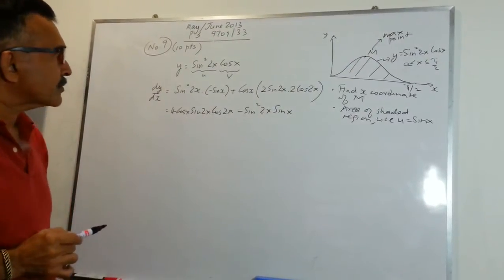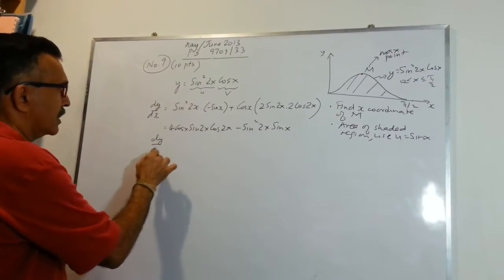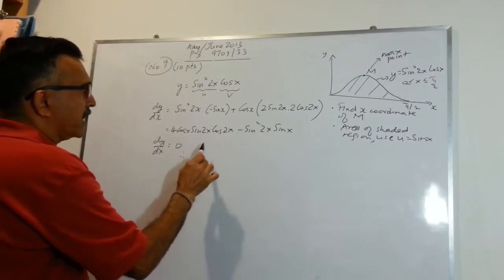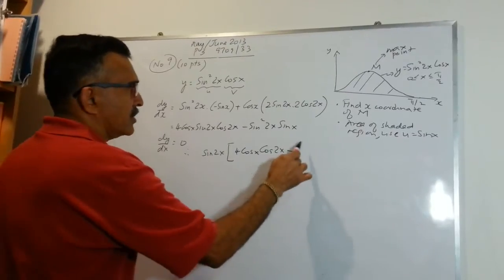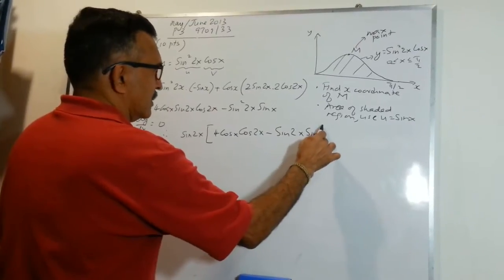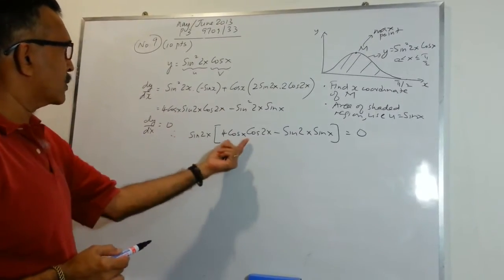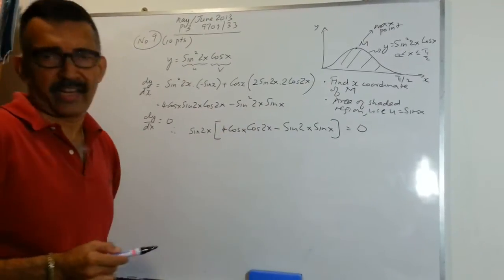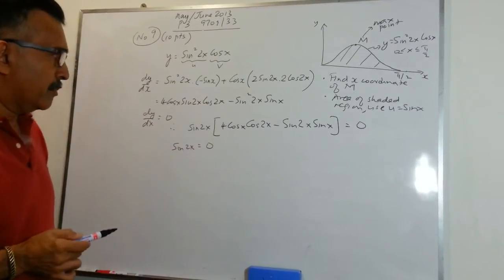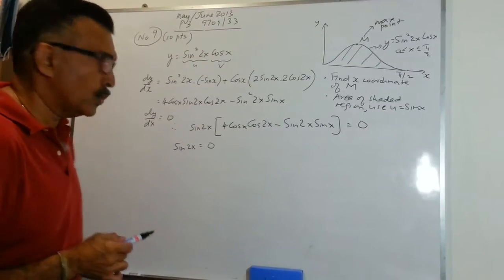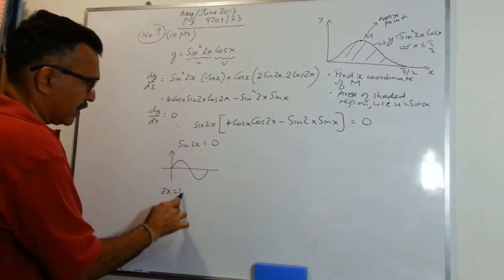We set dy/dx equal to 0 because we are dealing with a turning point. For M, therefore, I can write sin 2x times (4 cos x cos 2x minus sin 2x sin x) equals 0. I have just taken out sin 2x - we can call it factorizing. So we can set sin 2x equals to 0. Remember, we are dealing with x values between 0 and pi over 2, so 2x equals 0 or 2x equals pi, giving x equals 0 or x equals pi over 2.